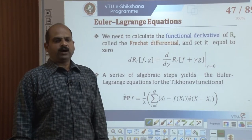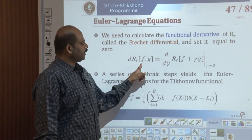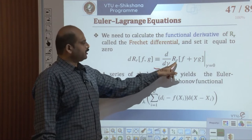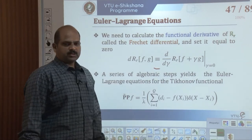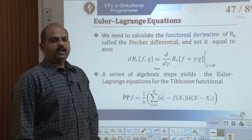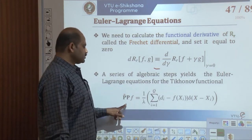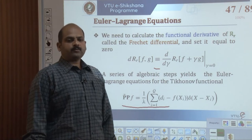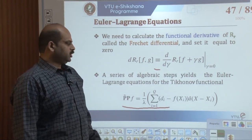The Fréchet differential of r is defined as: d r of f of g is equal to d by d gamma of r(f + gamma*g) with respect to gamma set equal to 0. From that equation, through a series of algebraic steps, we arrive at the Euler-Lagrange equation for this particular functional. This is called the Euler-Lagrange equation for the function r of f, and we are going to continue this particular session.